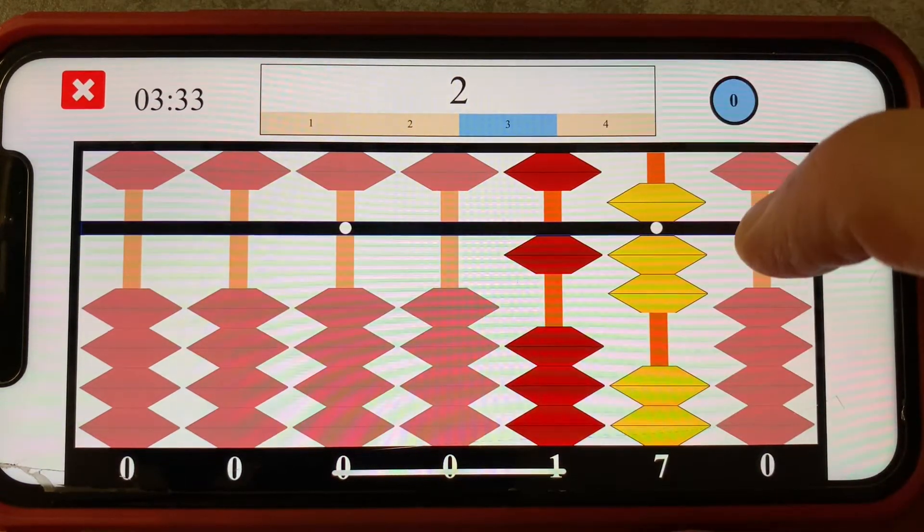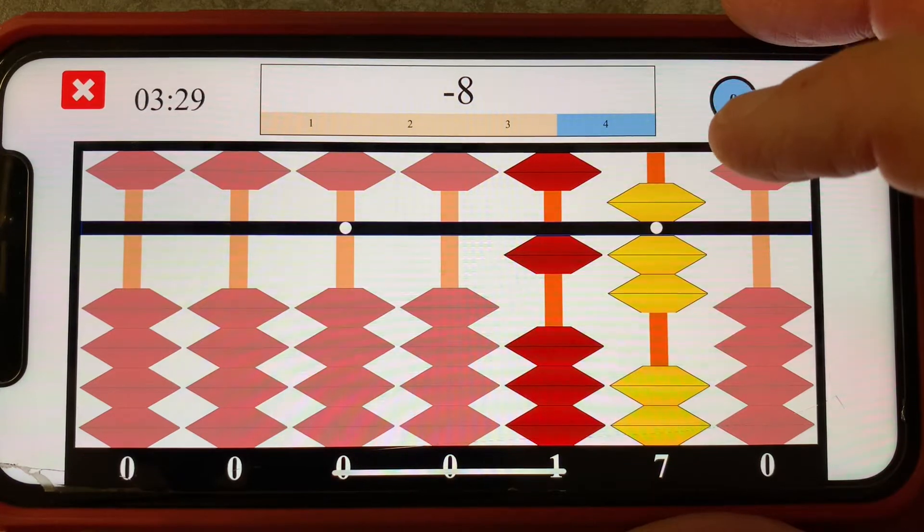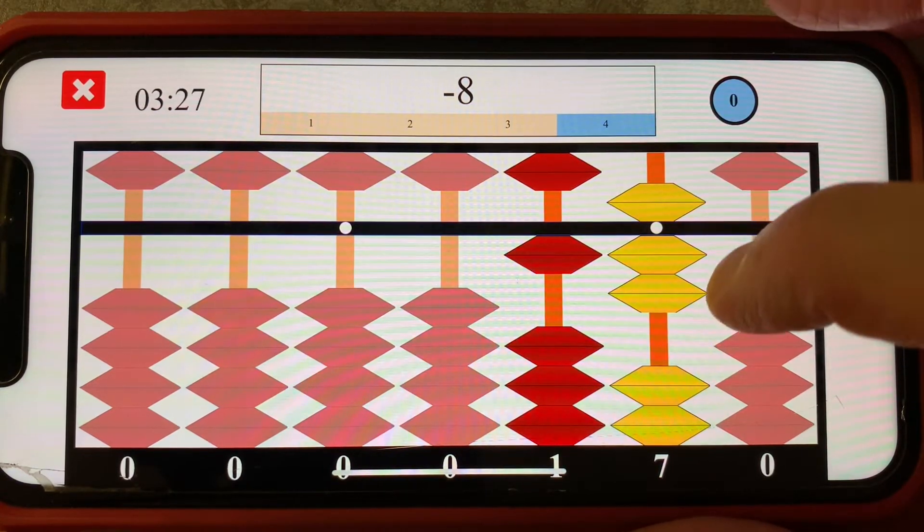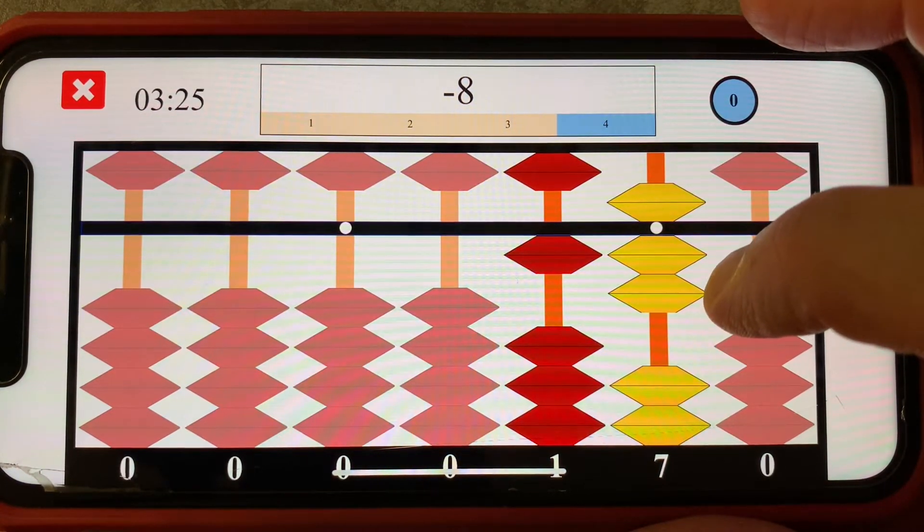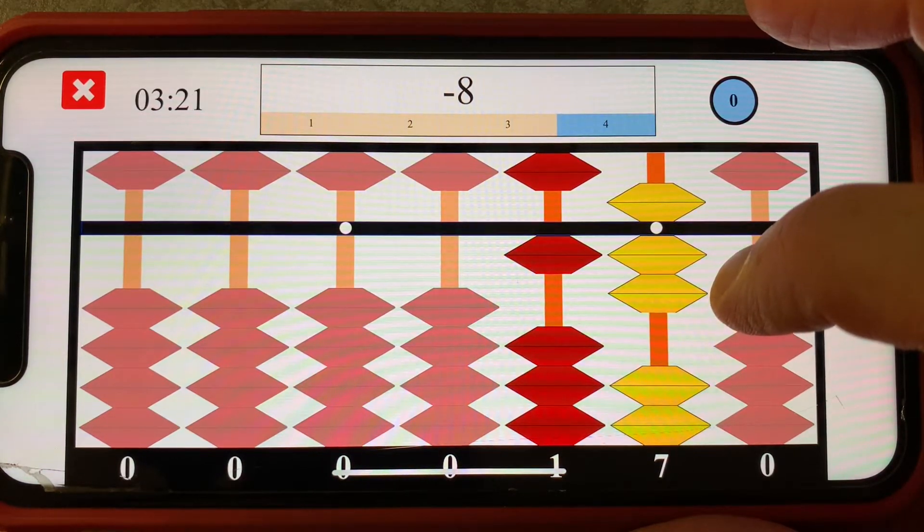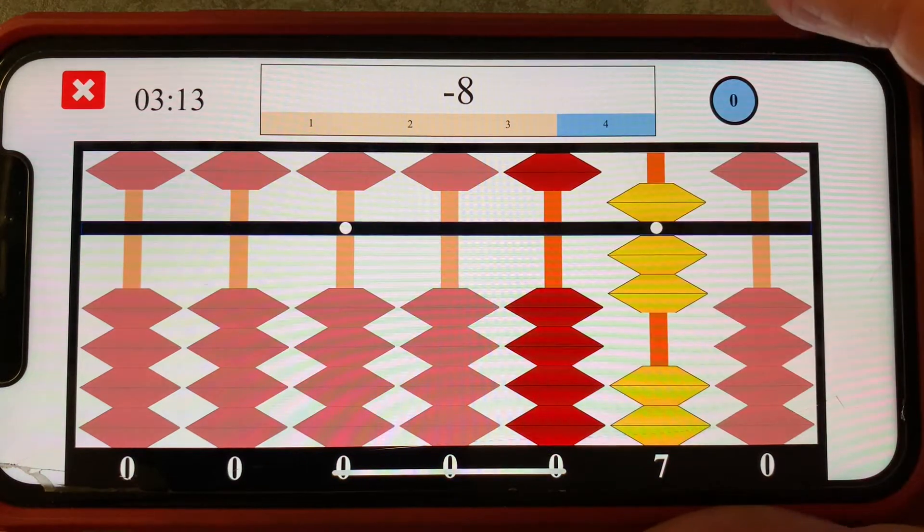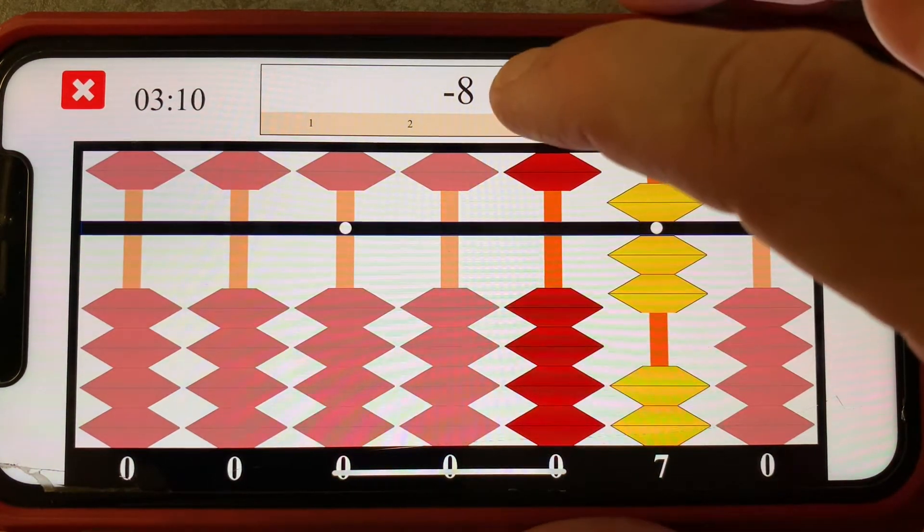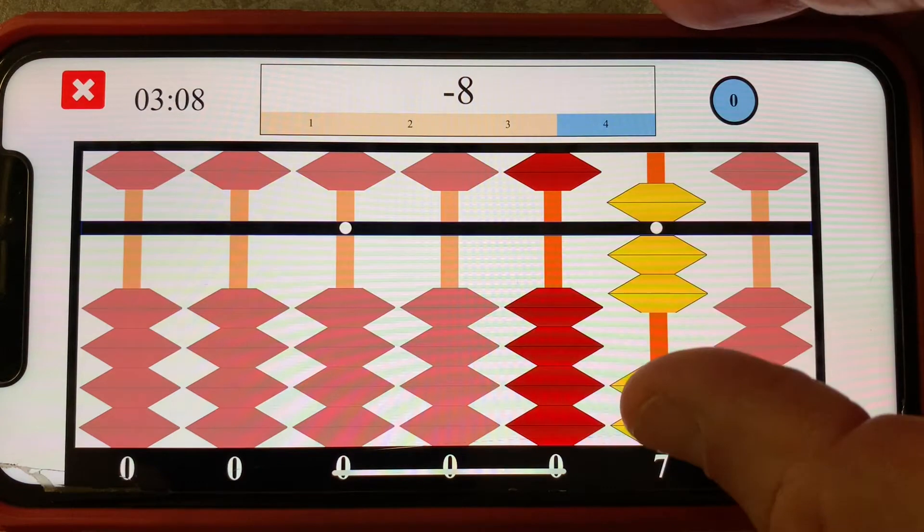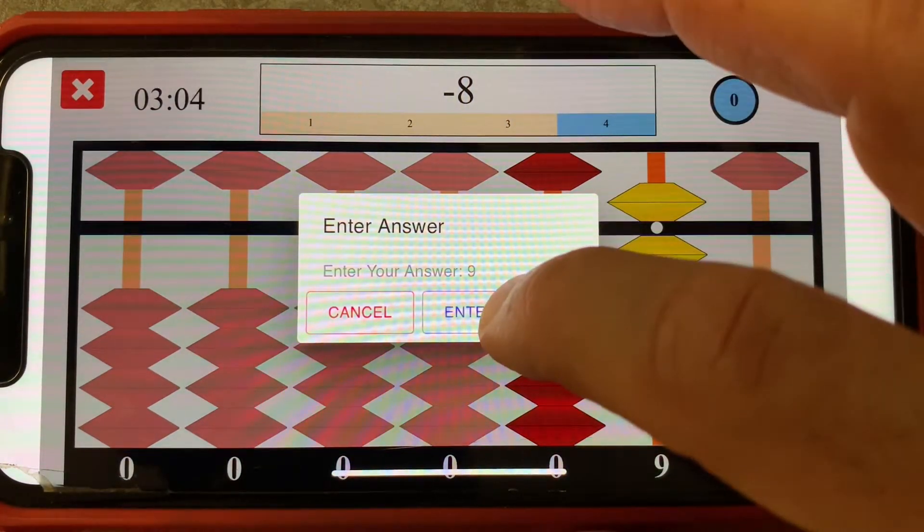Next I'll add two and then I need to subtract eight. Well I've only got seven beads touching the reckoning bar on my target rod which is not enough to subtract eight. So here I will need to use the ten pair subtraction rule. I subtract one from the next rod left and then add eight's ten pair, two, for a final answer of nine.